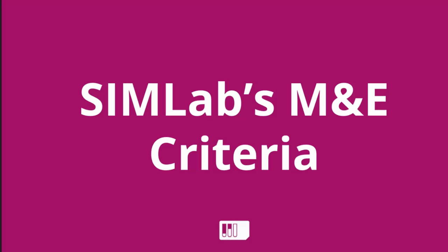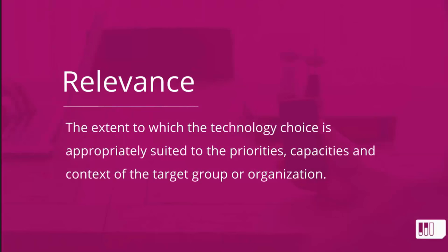The first criterion is relevance — from the original DAC — which looks at the extent to which an aid activity is suited to the priorities and policies of the target group, recipients, and donors. We've adjusted this to ask: was the technology choice appropriate for everyone involved? This means looking at your context ahead of time — what technology are people already using? If it's a largely illiterate population, you wouldn't implement SMS requiring them to read text messages; you might look at radio instead.